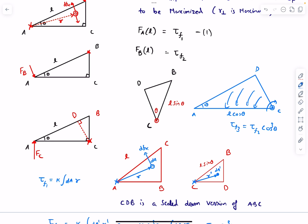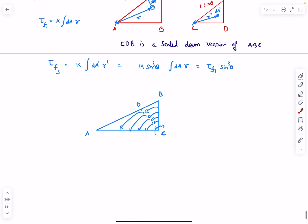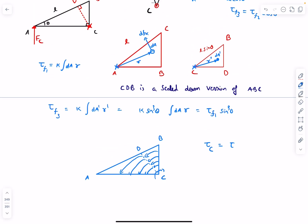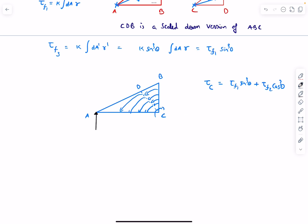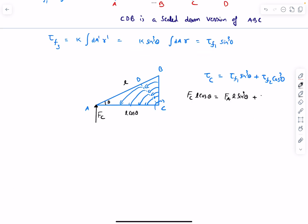If we try to rotate the complete triangle about C clockwise, we must overcome friction from both sub-triangles simultaneously. The total opposing torque is tau_f1 sin³theta plus tau_f2 cos³theta. Applying FC at point A, where the base length is L cos theta, the torque of FC is FC times L cos theta. Since tau_f1 = FA times L and tau_f2 = FB times L, we get: FC times L cos theta = FA times L times sin³theta + FB times L times cos³theta, giving FC = (FA sin³theta + FB cos³theta) / cos theta.